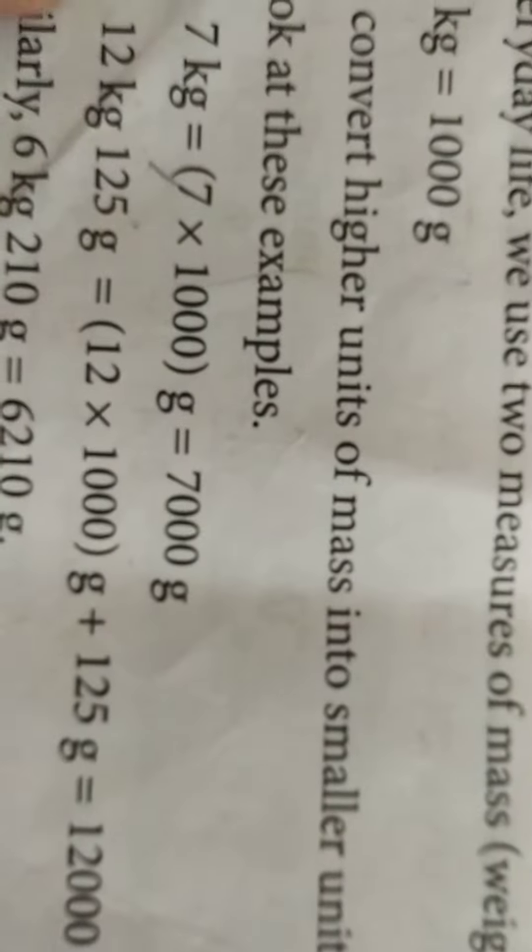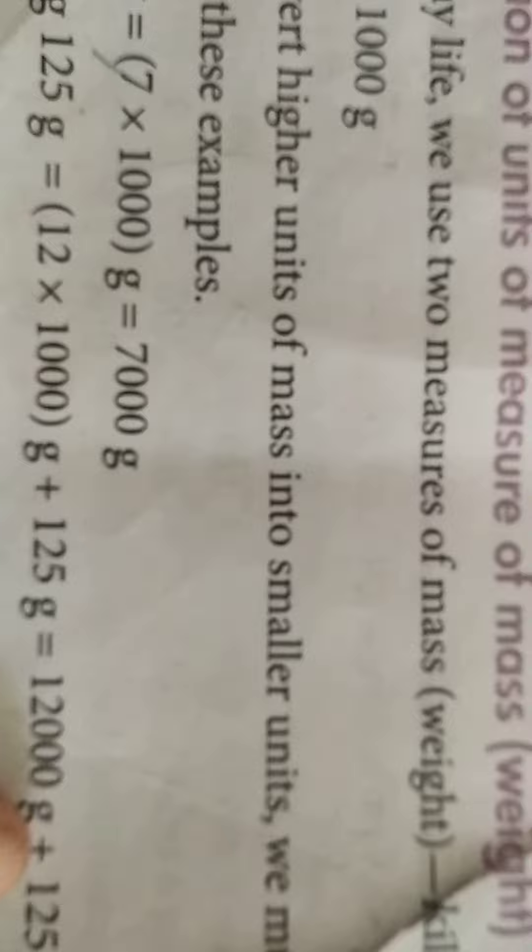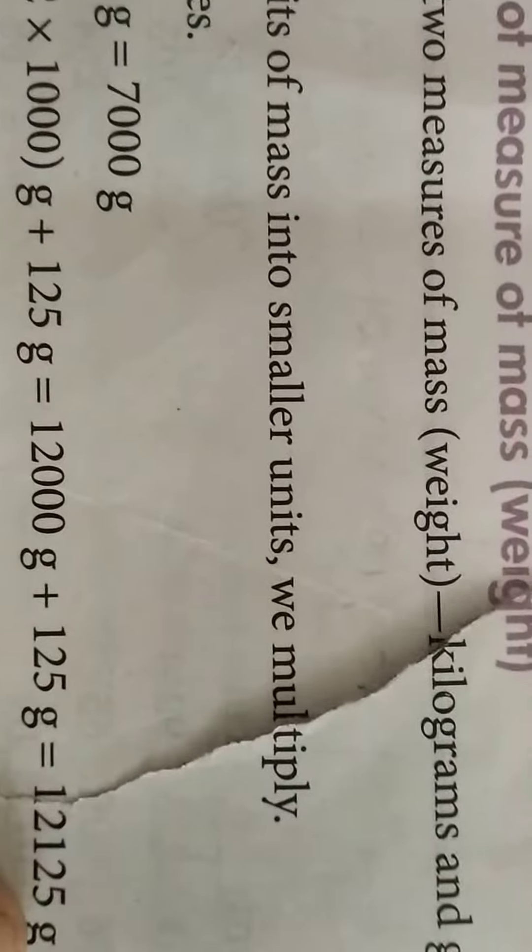12 kg 125 grams: 12 times 1000 grams. We are converting kg to grams to add both. 12 times 1000 grams is 12000 grams plus 125 grams equals 12,125 grams.